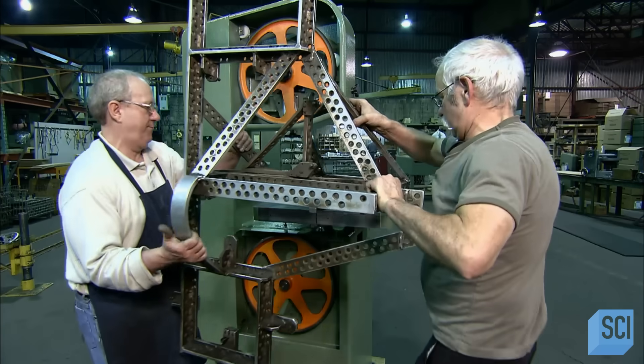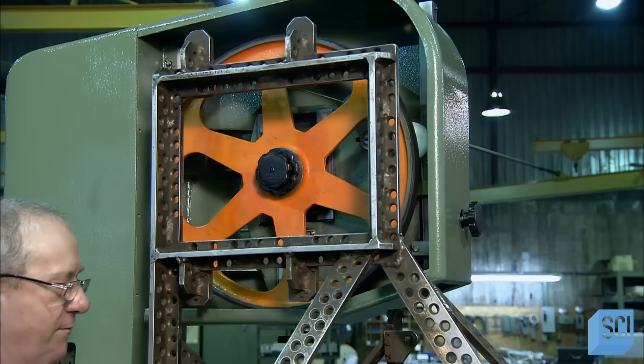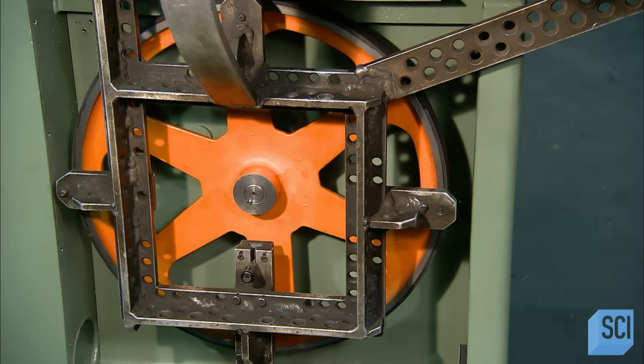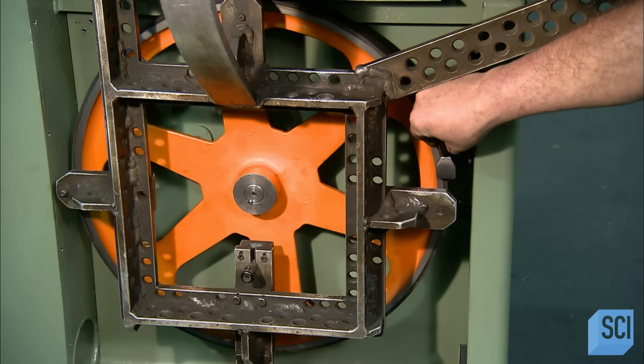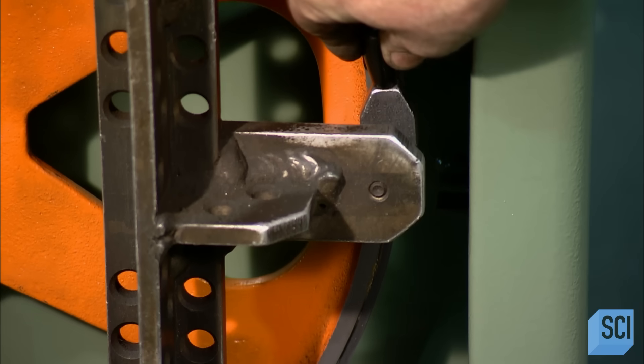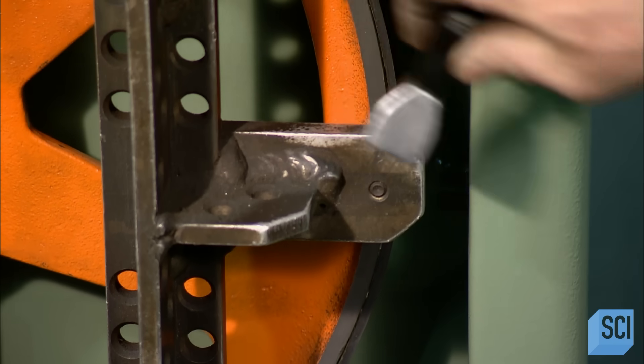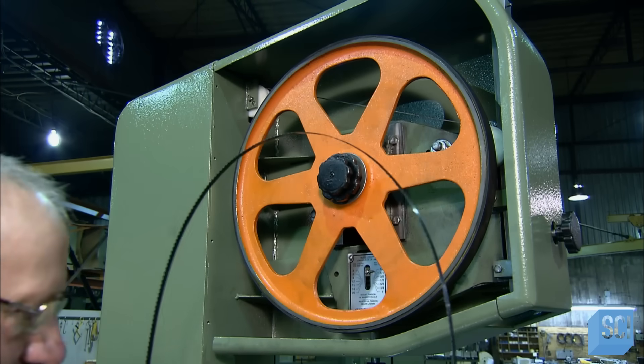Now for the most critical part of the assembly process. Workers use this jig as a precision guide to align the wheels. The wheels must be perfectly balanced to keep the saw blade stable while it's cutting. Once the alignment's complete...